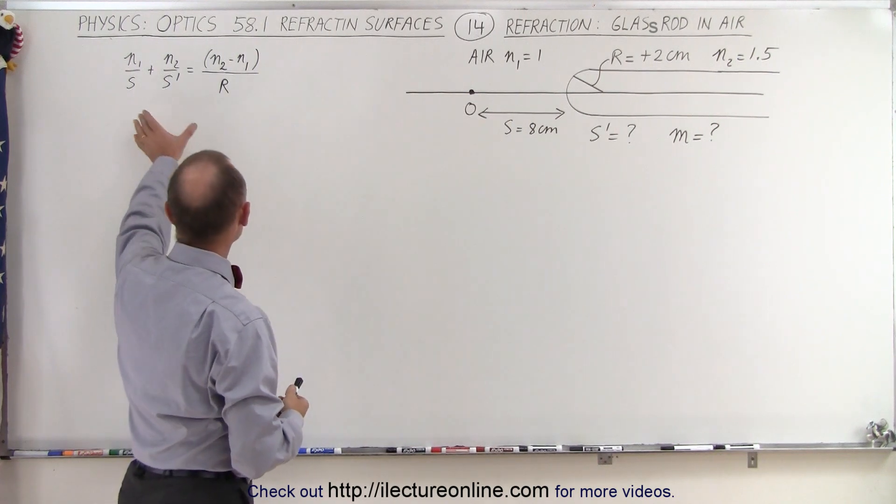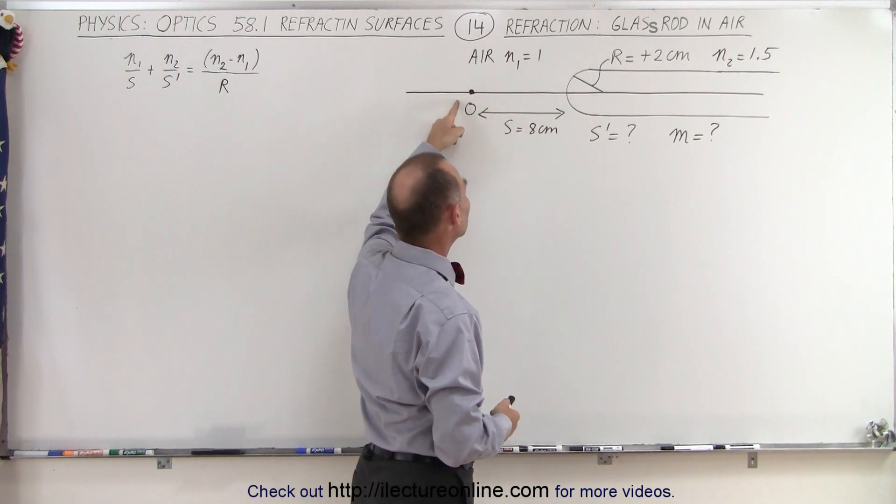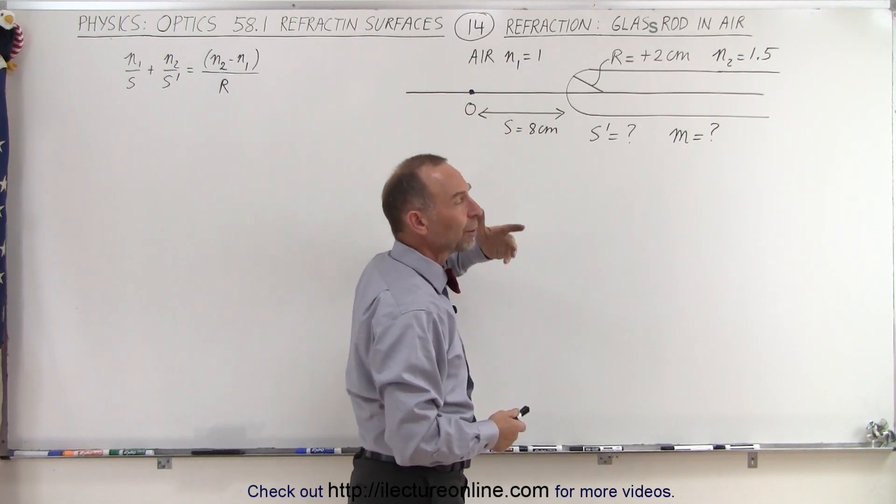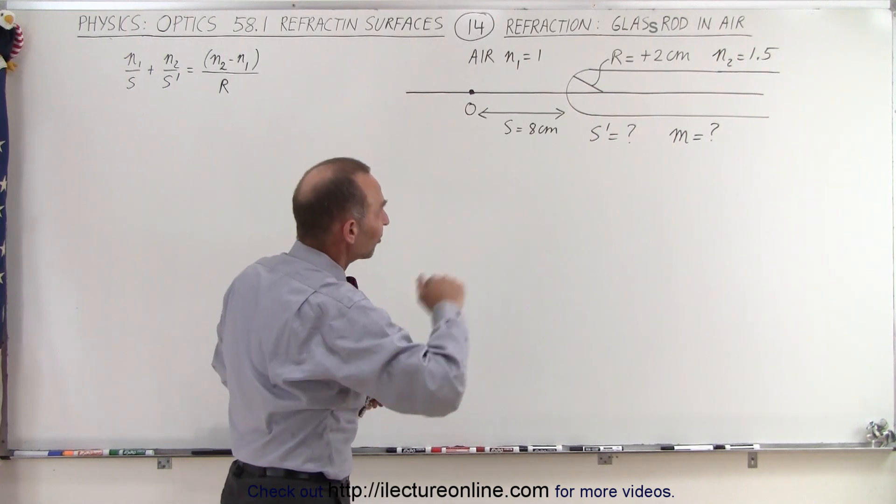So to do that, we again use our same equation. Remember that n1 is on the same side as where the object is, and 2 is on the side where we presume the image is going to be if the image is on the other side of the boundary.